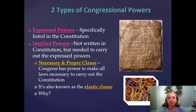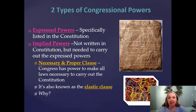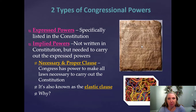Implied powers are actually part of the expressed powers through the necessary and proper clause listed in the Constitution. Article One, Section Eight, Clause 18 is the necessary and proper clause. It basically says Congress has the power to make all laws necessary to carry out the Constitution.